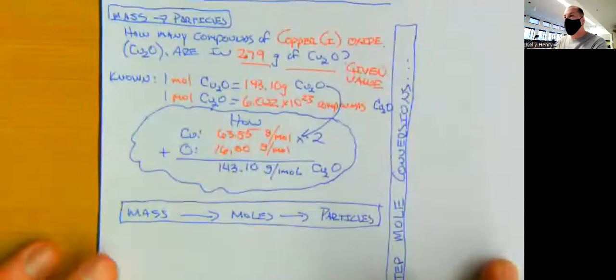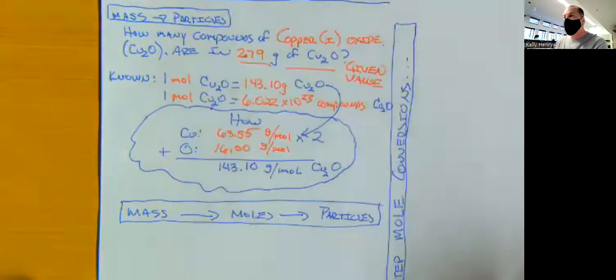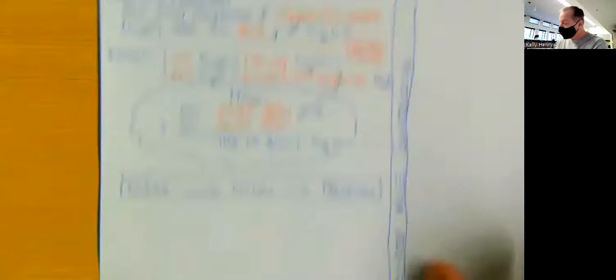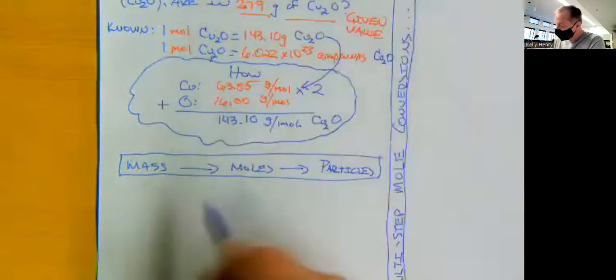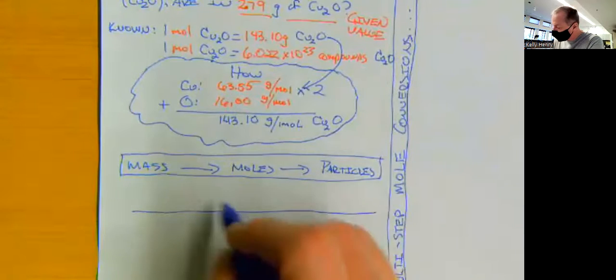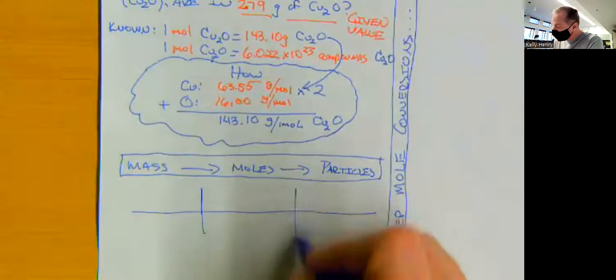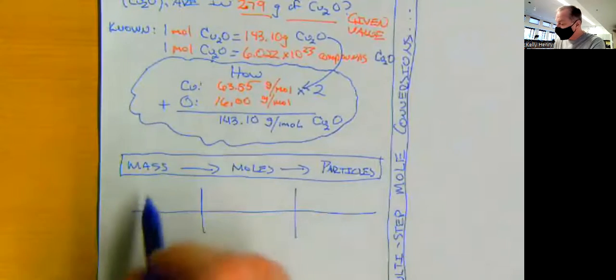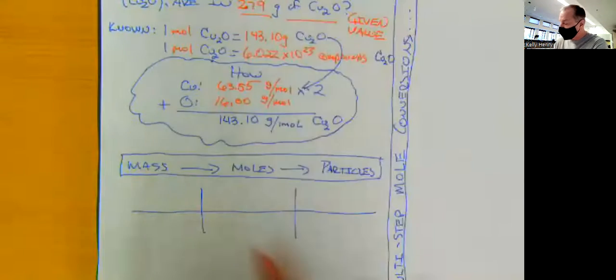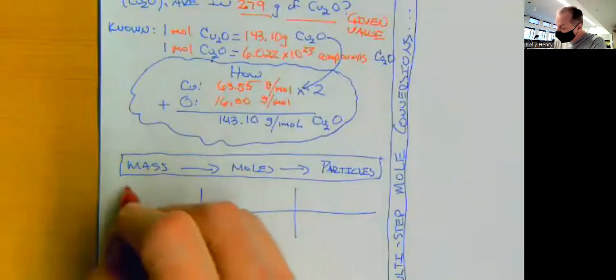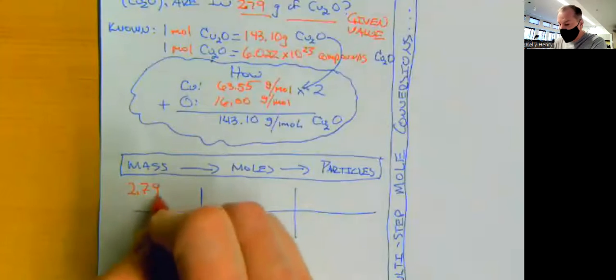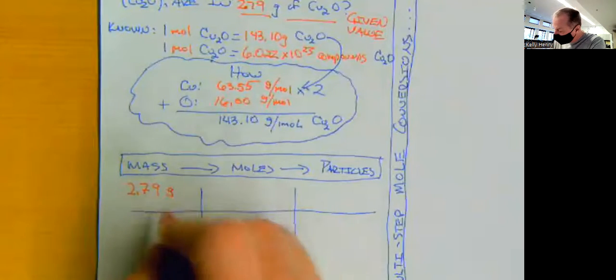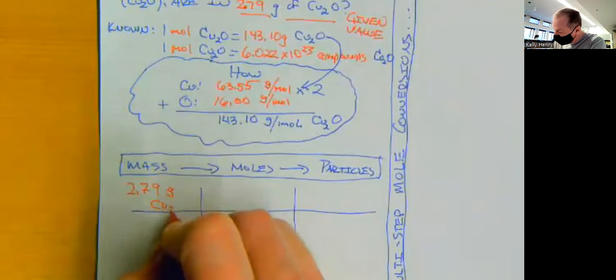Well, we look back up here. Our given value is 2.79 grams of copper one oxide. So let's set up our dimensional analysis here. And I'm going to kind of line this up with the conversions we're doing. So here we're going to put mass in this box, and we said we have 2.79 grams of copper one oxide.